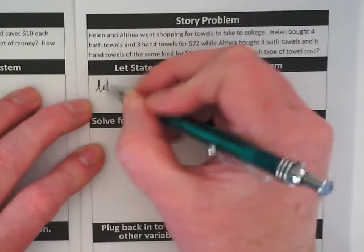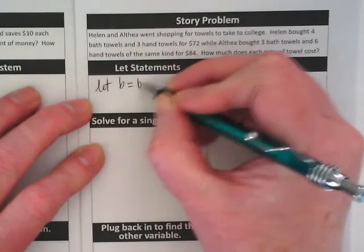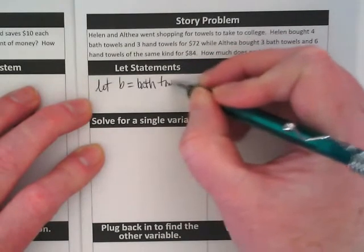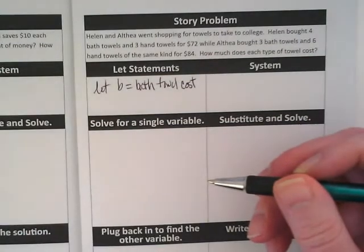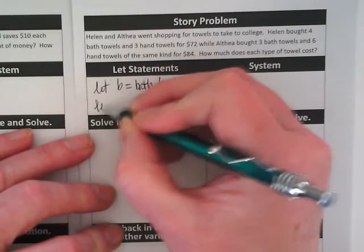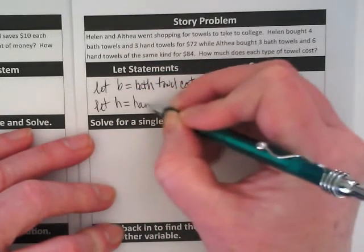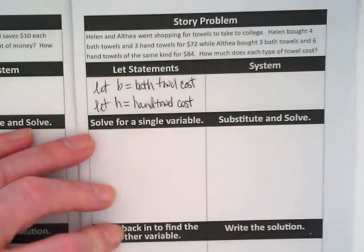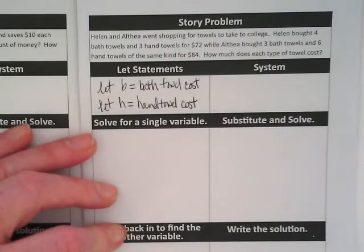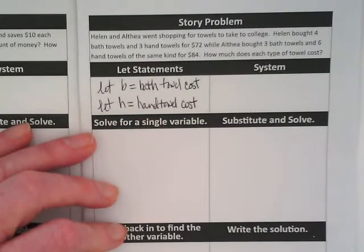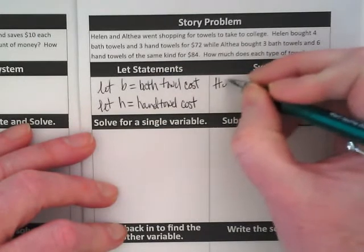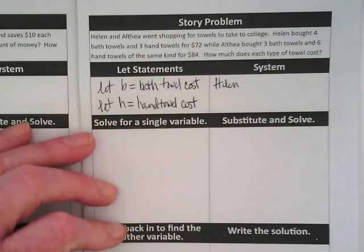So what we want to do is let B equal bath towel cost. Because that's the question we're being asked to solve. Let's let H then equal hand towel cost. We need to write two equations. We have two different sentences that lend us to these equations and there's one sentence for each person. Helen, her sentence reads, Helen bought four bath towels and three hand towels for $72. Try writing what you think that equation will be with the variables we've created.